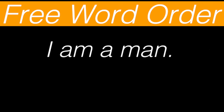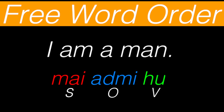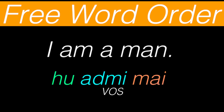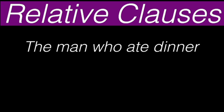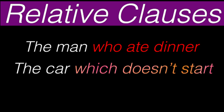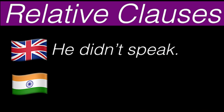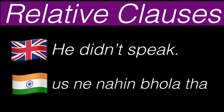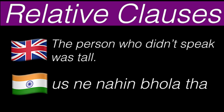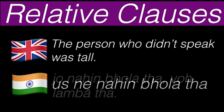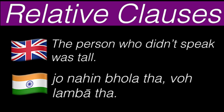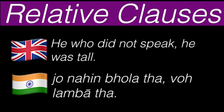For example, to say I am a man, you'd usually say main aadmi hu, but you can also say aadmi main hu or hu aadmi main. What's also interesting about Hindustani is the way it handles relative clauses. A relative clause in English is something like the man who ate dinner or the car which doesn't start. Hindustani uses correlative clauses which can go before or after the entire clause. For example, to say he didn't speak, you say usne nahi bola. But to say the person who didn't speak is tall, you say jo nahi bola vo lamba tha — literally, he who did not speak, he was tall.